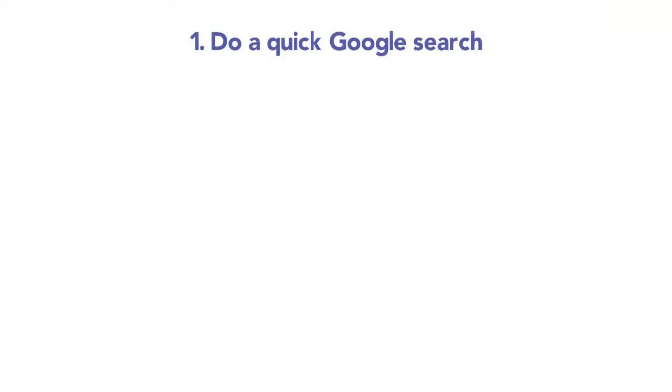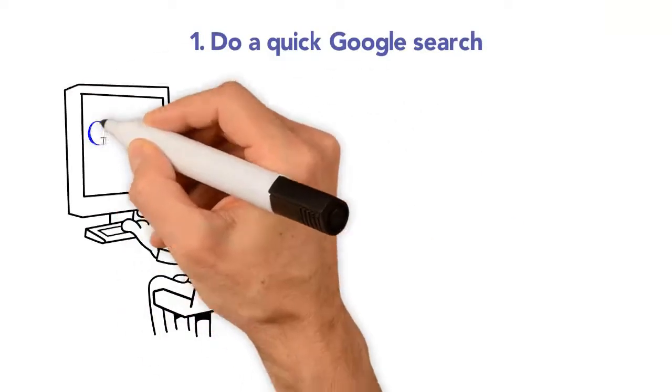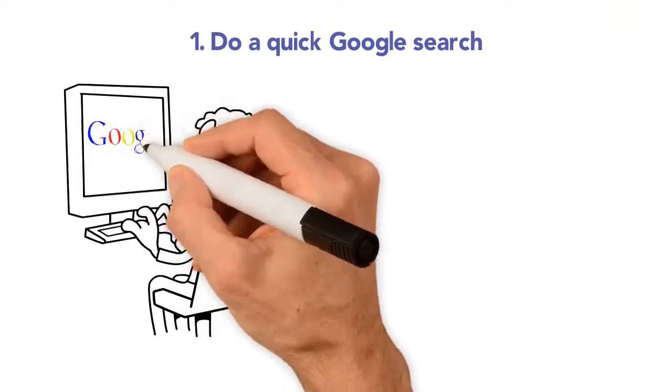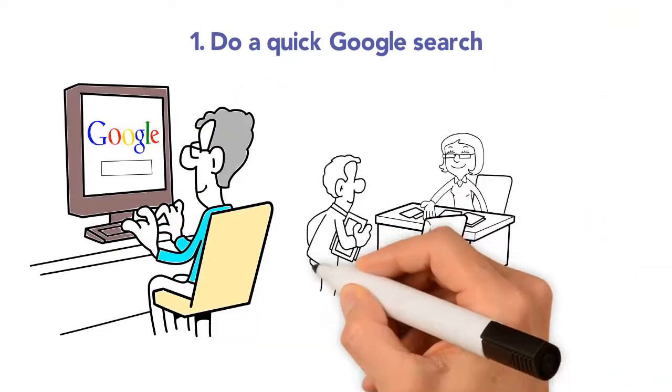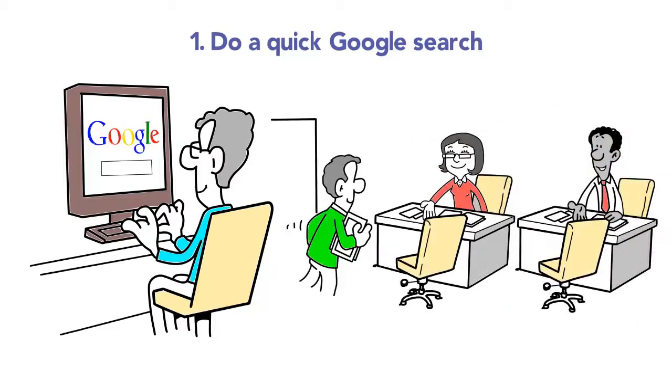1. Do a quick Google search to see if there is anyone that has the name that you want. Unlike your kid, two similarly named companies aren't allowed to exist, so if there's someone out there with a similar name, it may be good to find a different name.